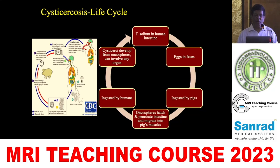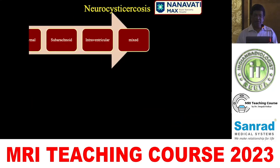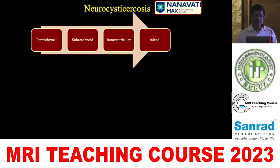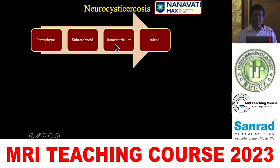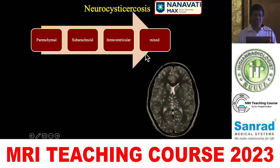Most of them get lodged in muscles, but they can go into the brain, eyes, and almost everywhere. In the brain, there are four different types of presentations. What we commonly see is parenchymal cysticercosis, but you can have them in the subarachnoid space, intraventricular space, or it can be mixed.